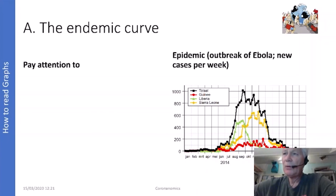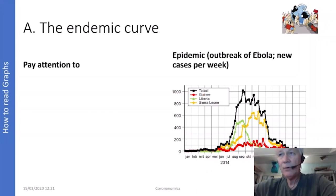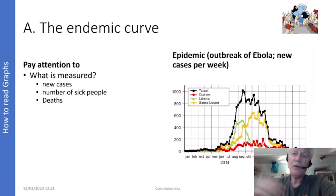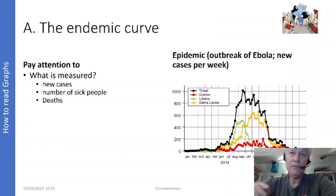This is an epidemic curve showing the outbreak of Ebola — new cases per week, with total in black, Guinea in red, Liberia in green, and Sierra Leone in yellow. You can see that timing and impact follow different patterns. When reading epidemic graphs, pay attention to three key elements. First, what is measured: is it new cases, the number of sick people, or deaths? New cases are precisely measured early in the crisis but fade away later when testing cannot be done.